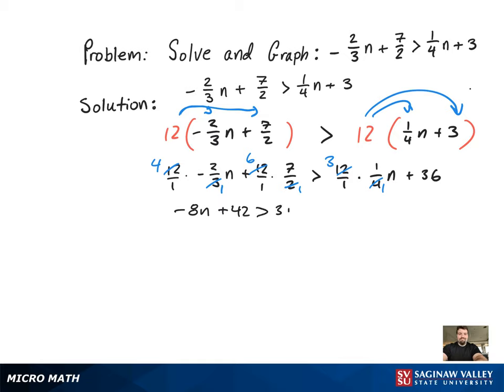All that's left to do is just get all the variables to one side, constants to the other. Now subtract 36.